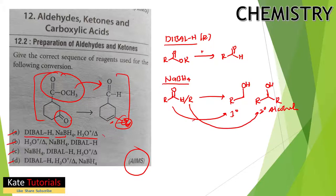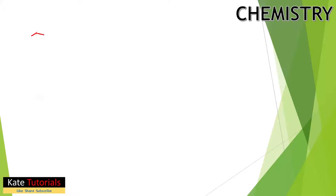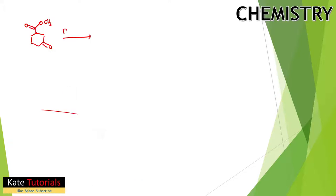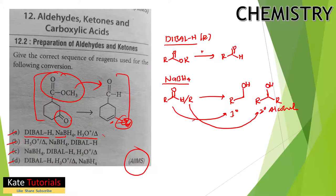Starting with option A: we have an ester (OCH3) and a ketone. The first reagent in option A is DIBAL-H. DIBAL-H will convert the ester into an aldehyde, while the ketone remains unchanged.